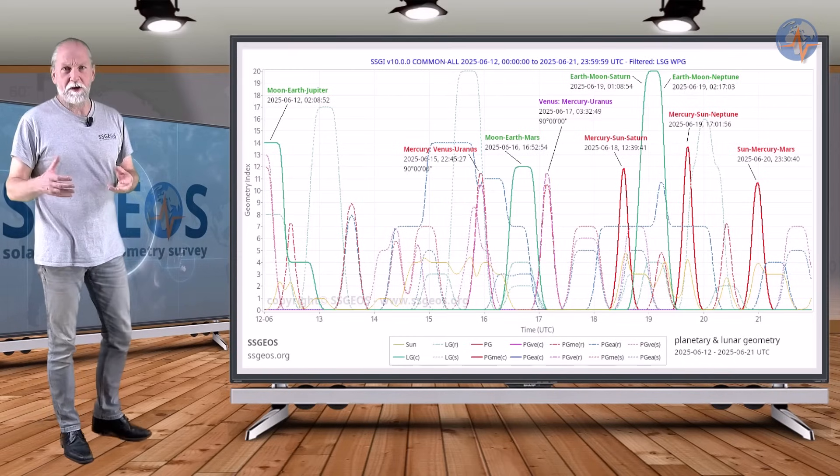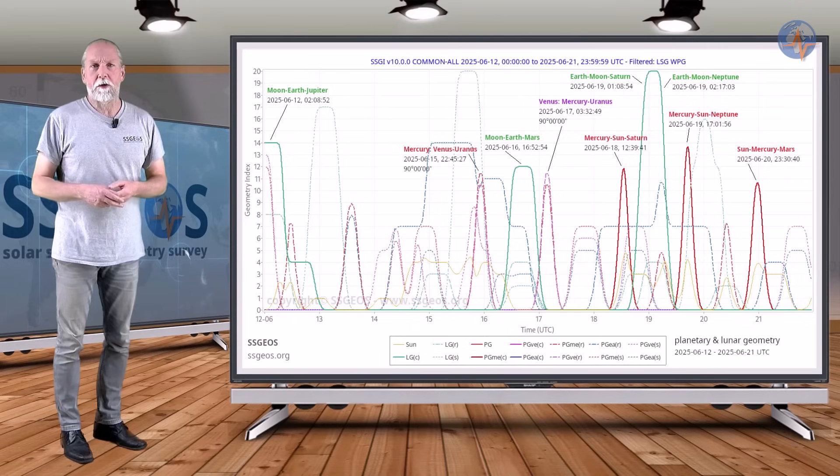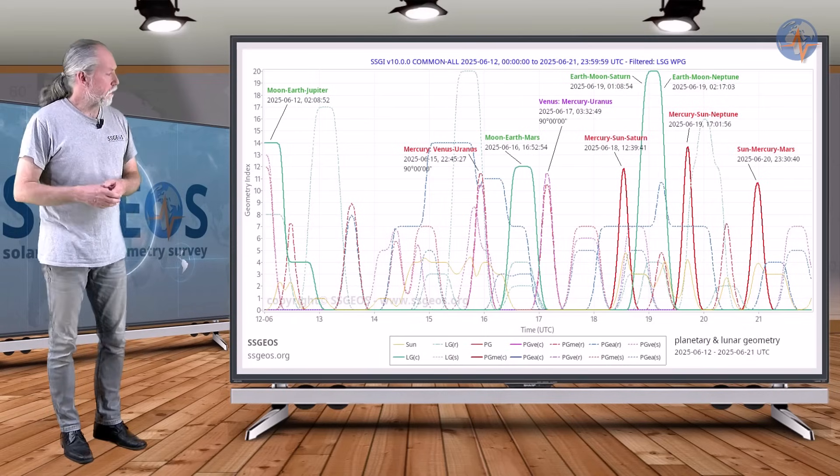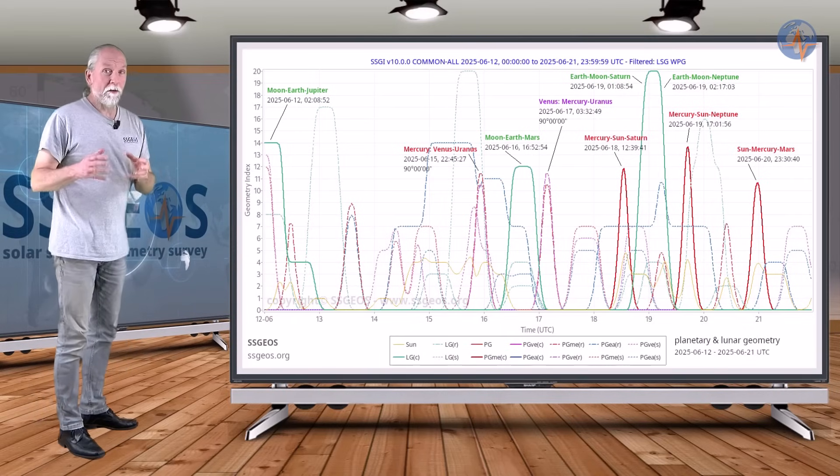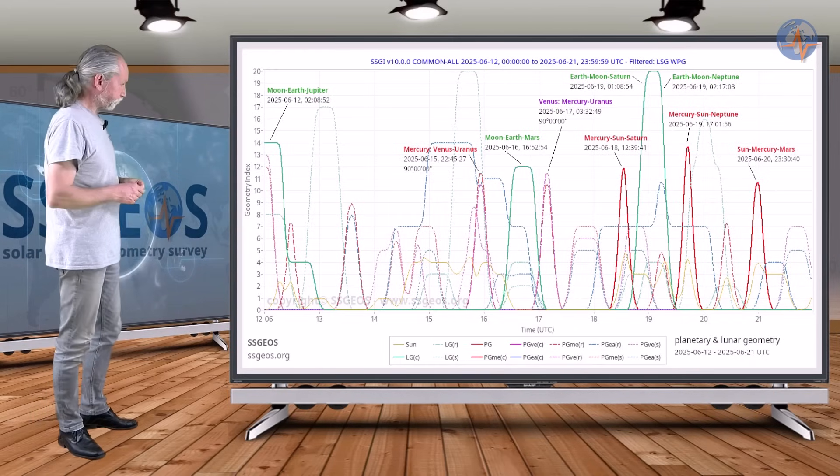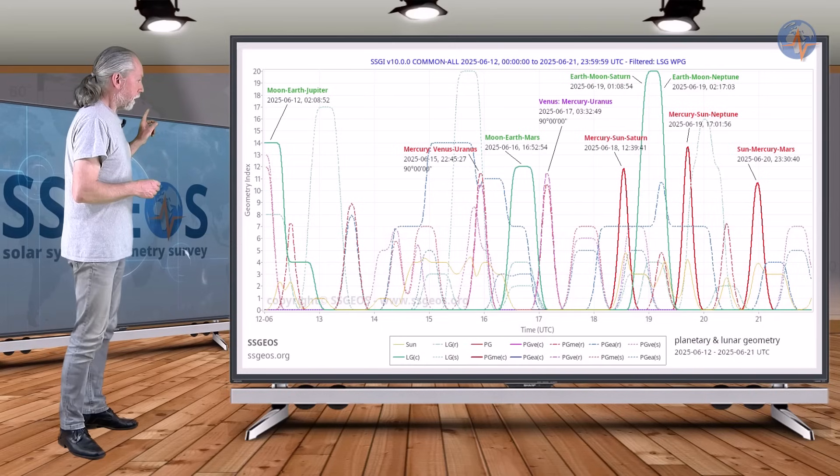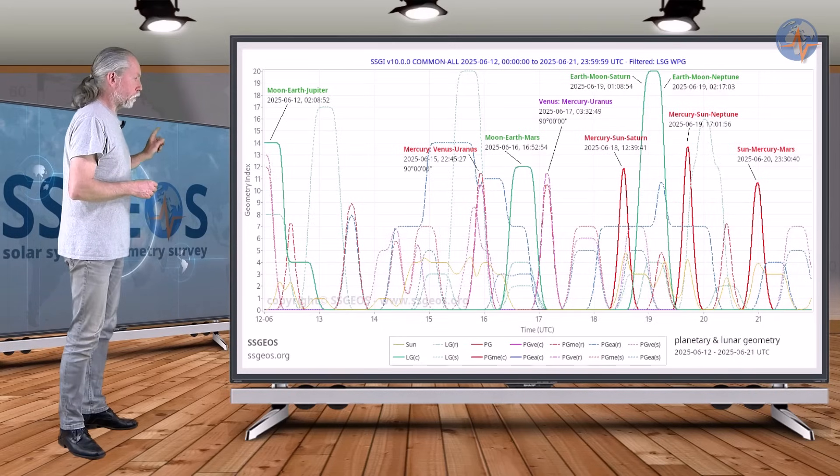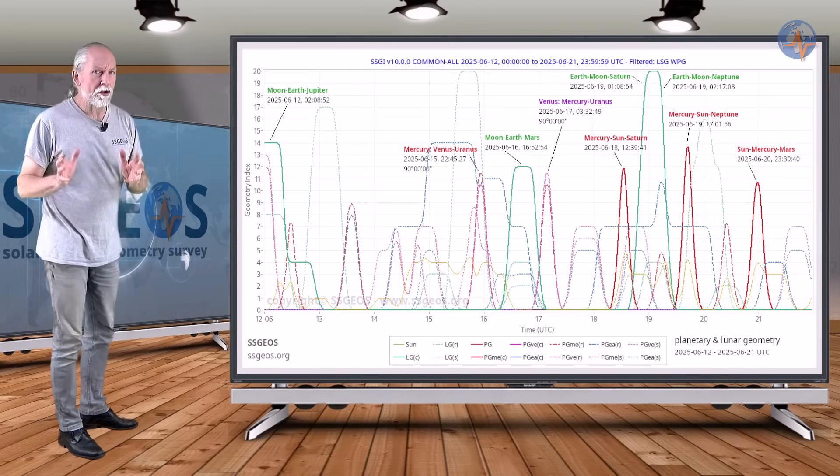That could result in a typical stronger seismic event clustering of stronger earthquakes, the higher five magnitude earthquakes in particular, maybe borderline six. Around the 17th we have a significant geometry coming up with Venus.